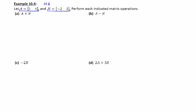So part A just simply says A plus B. So that's matrix A plus matrix B. So I'm going to copy down matrix A which is 1, 4 and then I'll copy down matrix B, negative 2, 3.